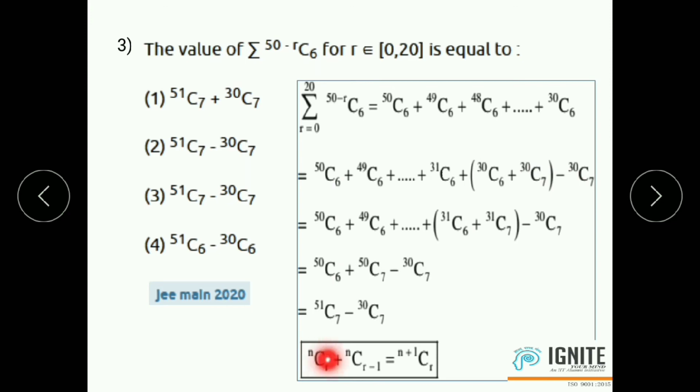By using this property nCr plus nC(r-1) equals (n+1)Cr. Here, 30C6 plus 30C7. Take highest value bottom side, take highest value. Here, 30C6 plus 30C7 equals 31C7. Consider these two terms again, 31C6 plus 31C7. We get 32C7. Like that, finally we get 51C7 and the term 30C7. The answer is 51C7 minus 30C7, answer option 3.